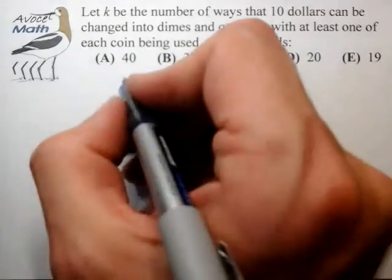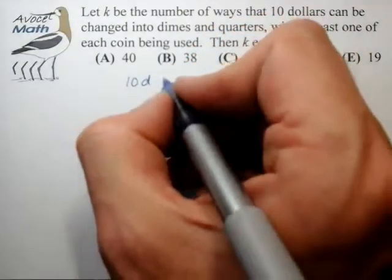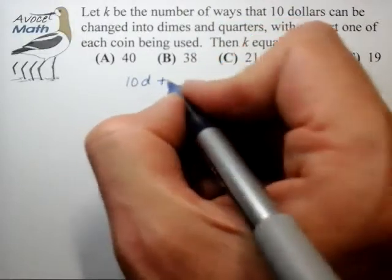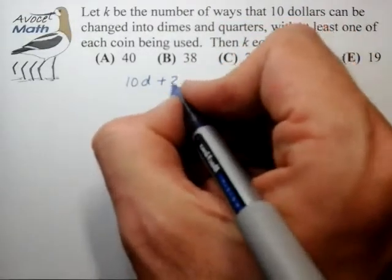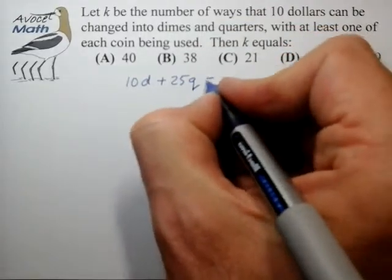Let's try to translate that into mathematical terms. We have dimes being 10 cents each, so 10 times the number of dimes plus quarters, which are 25 cents each, times the number of quarters equals 10 dollars.